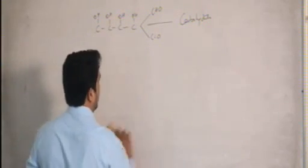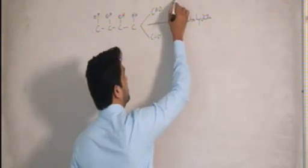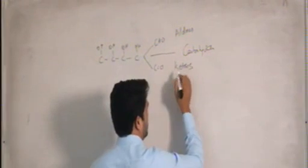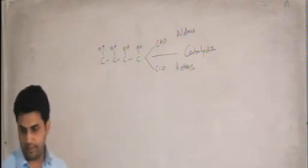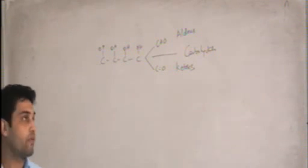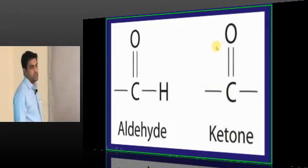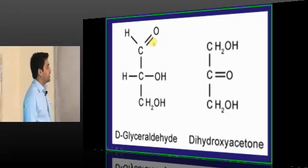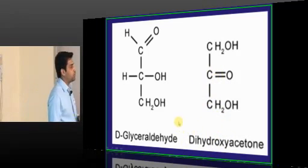Carbohydrates either have an aldehyde group or a keto group. Those with an aldehyde group are called aldoses; those with a ketone group are called ketoses — giving us aldotriose, ketotriose, aldotetrose, and so on. Glyceraldehyde has an aldehyde group so it is an aldose, whereas dihydroxyacetone is a keto isomer. These two are aldo-keto isomers.